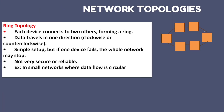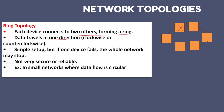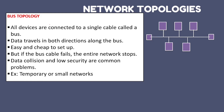The second is ring topology. Each device connects to two others forming a ring. Data travels in one direction only — either clockwise or anti-clockwise. It is a simple setup, but if one device fails, the whole network collapses. It is not very secure or reliable.